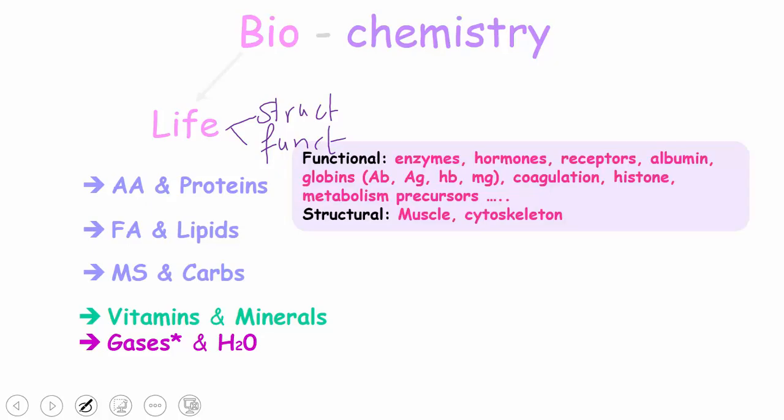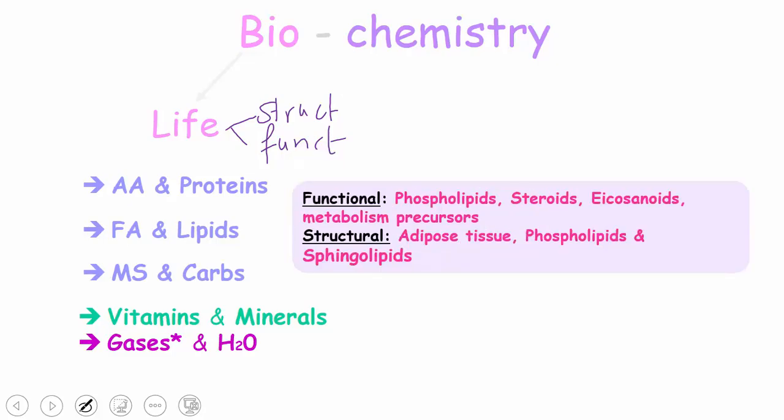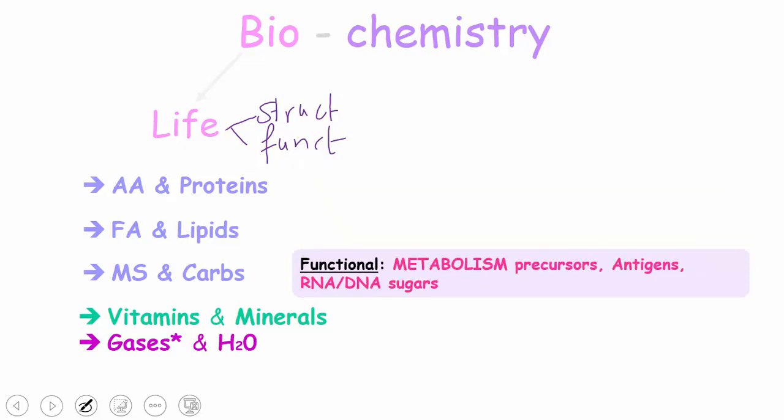For amino acids and proteins, functional would be something like enzymes which is present almost everywhere in our body, hormones, receptors and so on. I wouldn't go into details of whatever that is listed here but it will come in details in the future videos. These are examples for fatty acids and lipids. These are examples for monosaccharides and carbs.